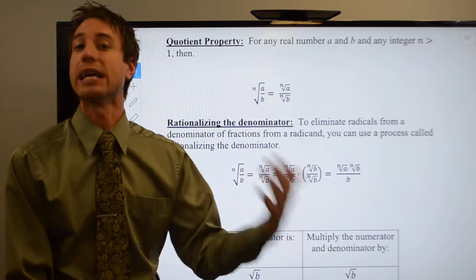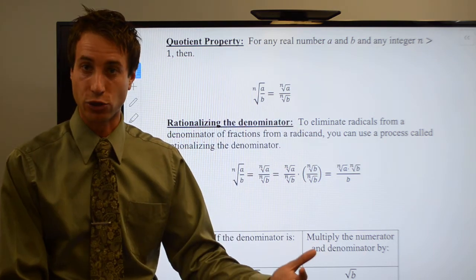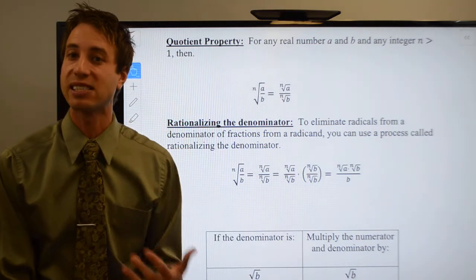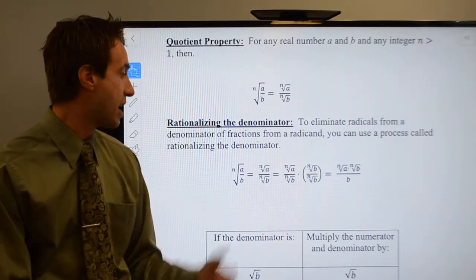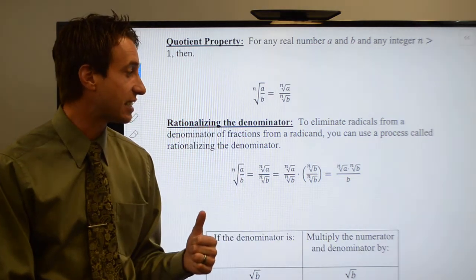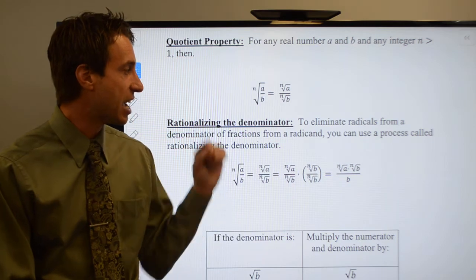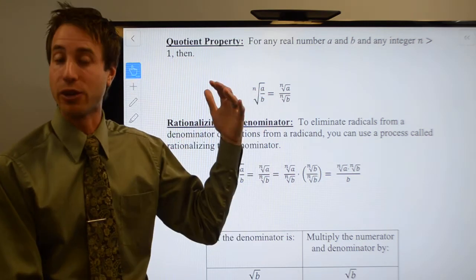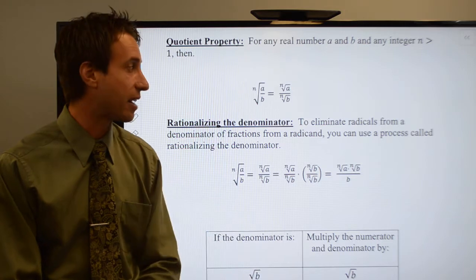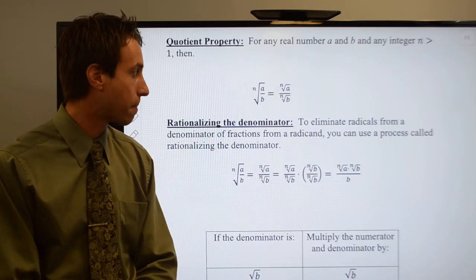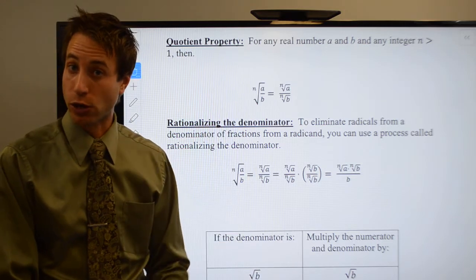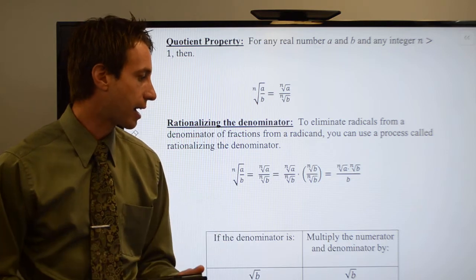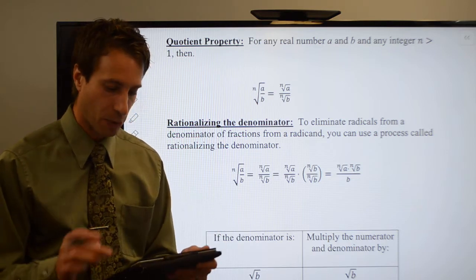So how do we go about doing that? The way we're going to do that is a technique — a process known as rationalizing the denominator. It's going to help us get that radical out of the denominator and bring that radical out of the basement. Let's go ahead and take a look at how this works, and then we'll try a couple of example problems.